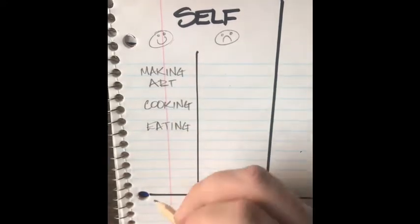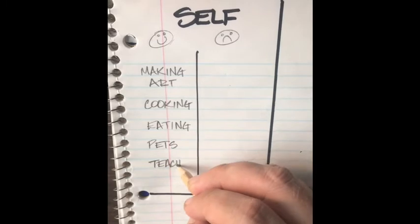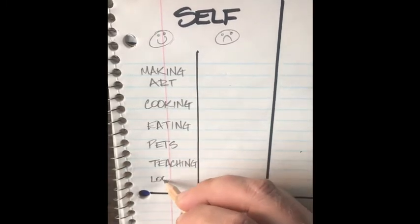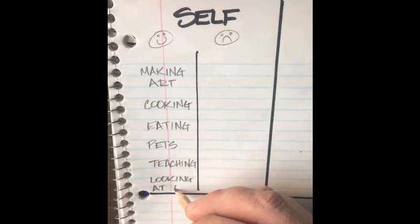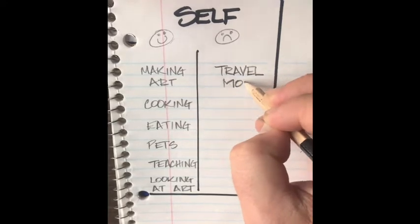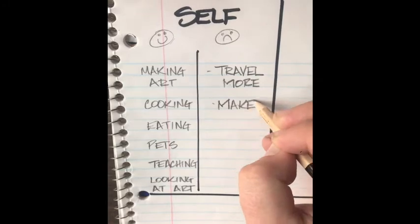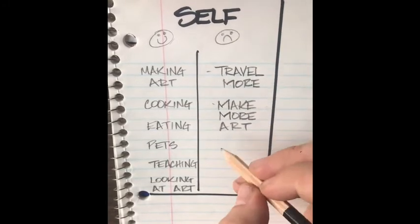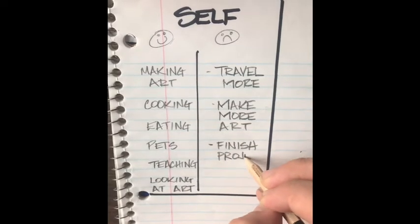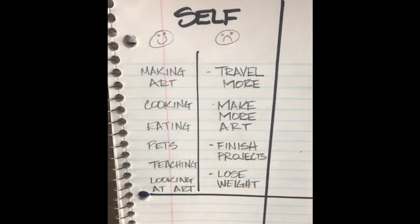I like making art, cooking, I like eating, I love pets, I love teaching, and I also love looking at art. These are things I love to do, things I'm proud of, and things I excel at. Then things I want to fix about myself — I'd like to travel more, make more art, find more time to make art, and I'd like to finish projects. I start a lot of projects and often don't find time to complete them. I'd also like to lose some weight.